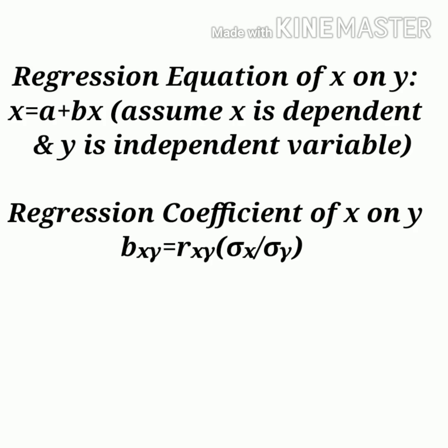Similarly, we can derive the regression equation of x on y, where x is the dependent variable and y is the independent variable. Applying the least squares method and forming the normal equations in the same way, we get the regression coefficient of x on y: b_xy = r_xy · (σ_x / σ_y). That is the complete derivation.